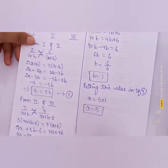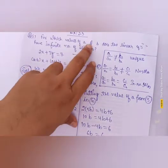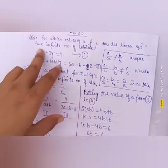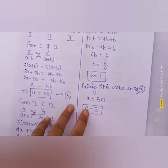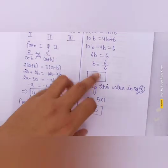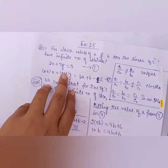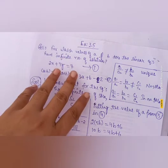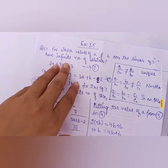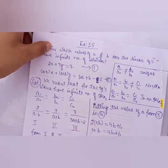Substituting b = 1 in Equation 3: a = 5 × 1, so the value of a = 5. We have found our values of a and b. The pair of linear equations have infinite number of solutions when a = 5 and b = 1, because putting these values makes the two lines coincident. Now we move on to the second part.